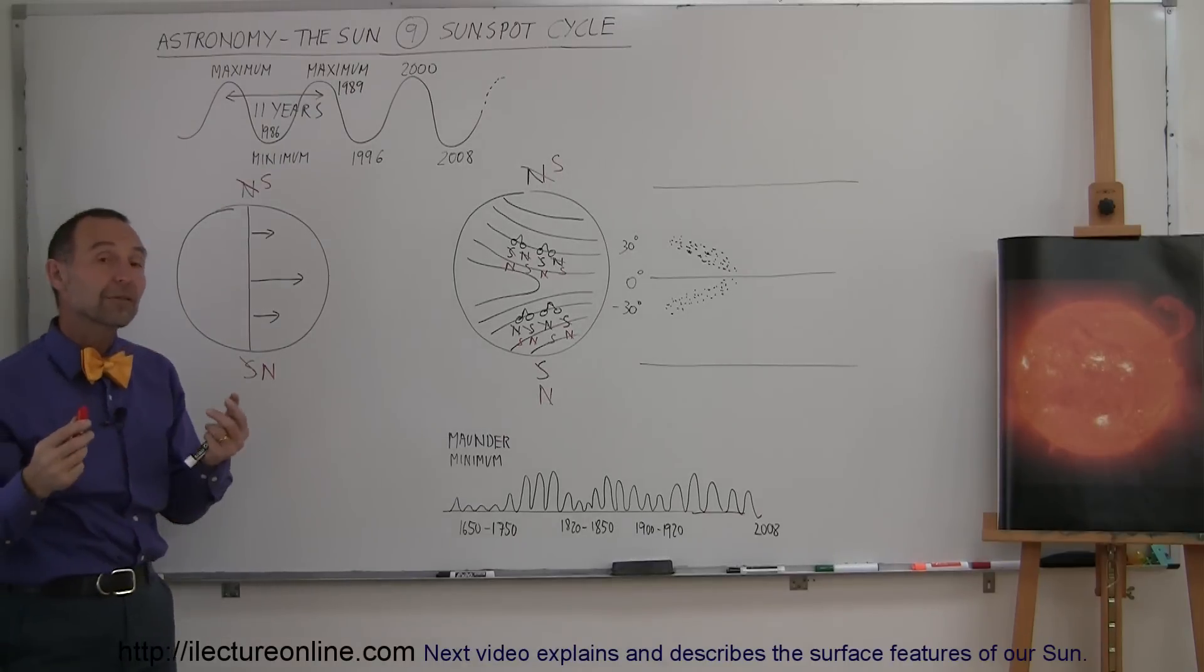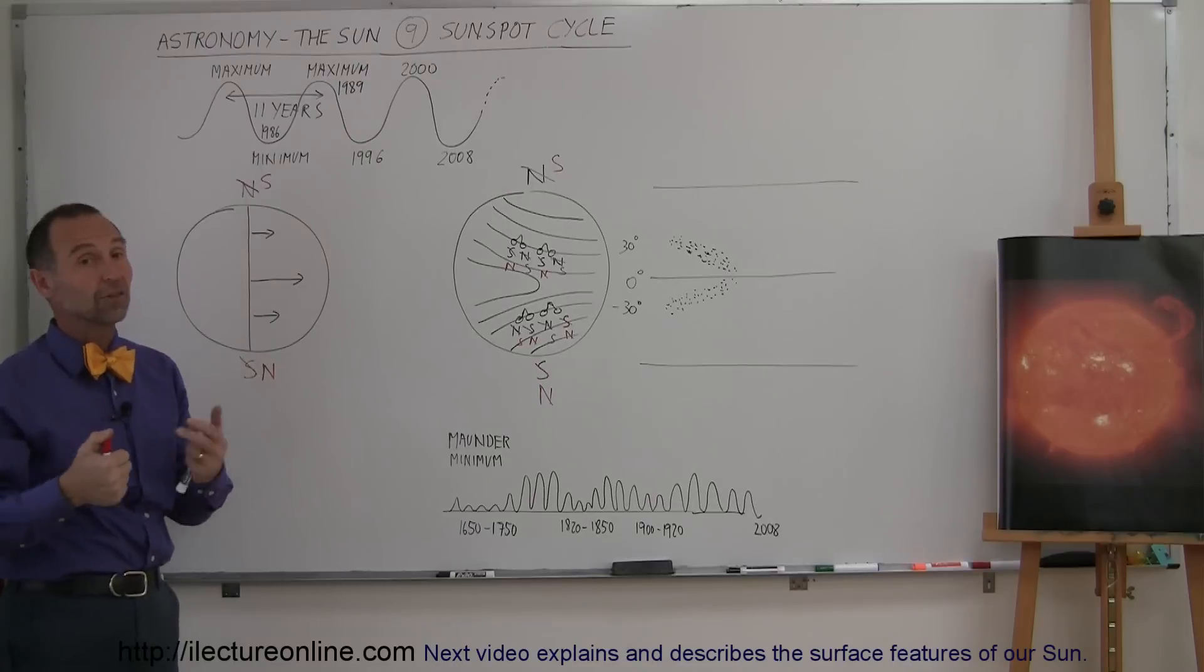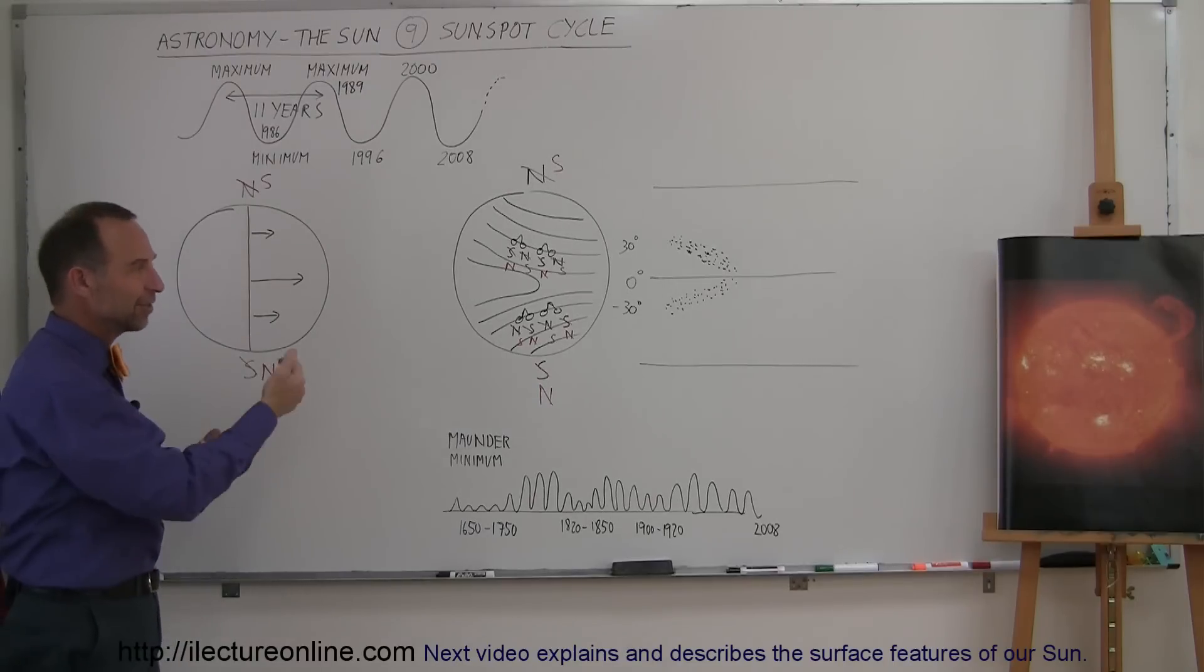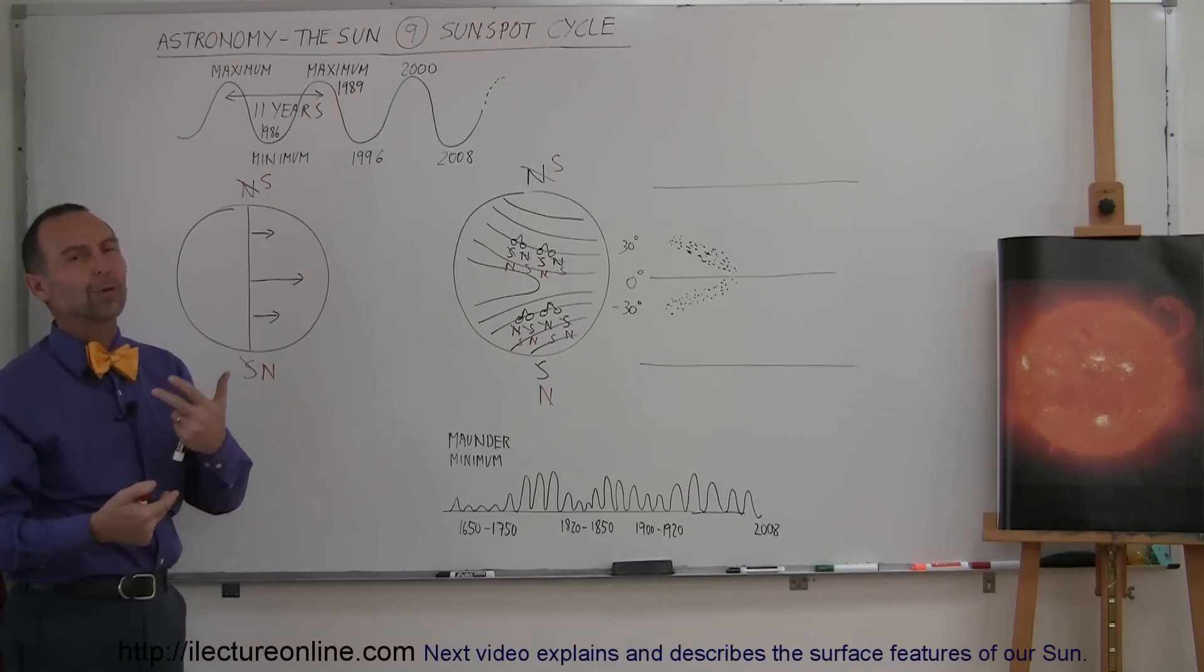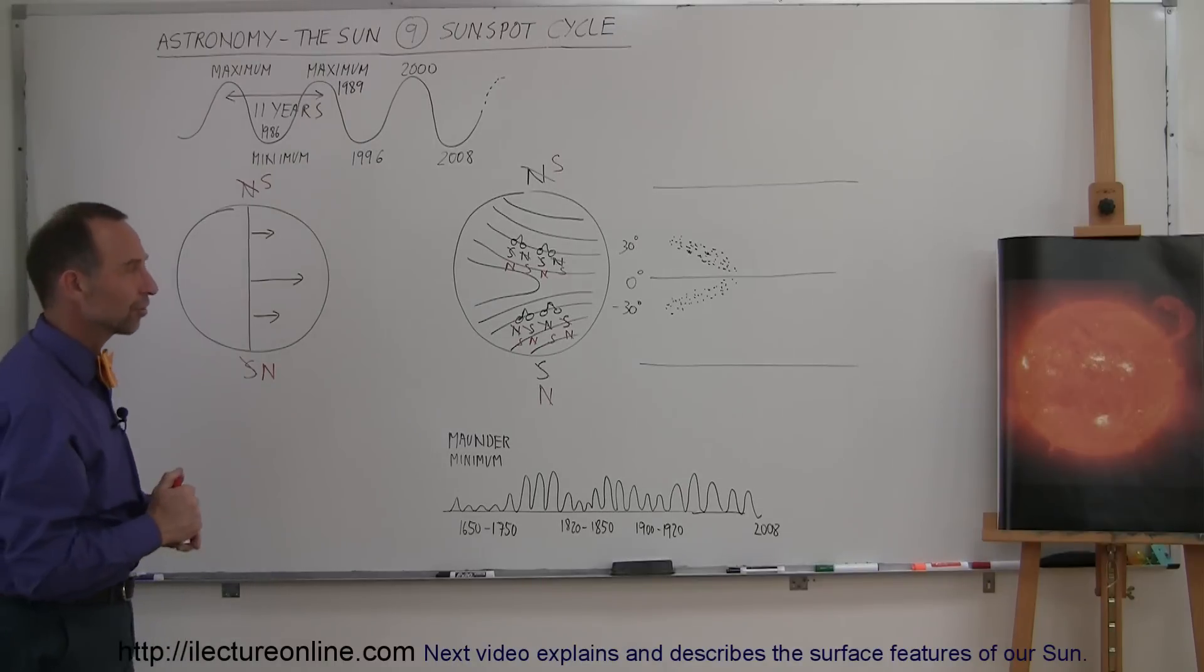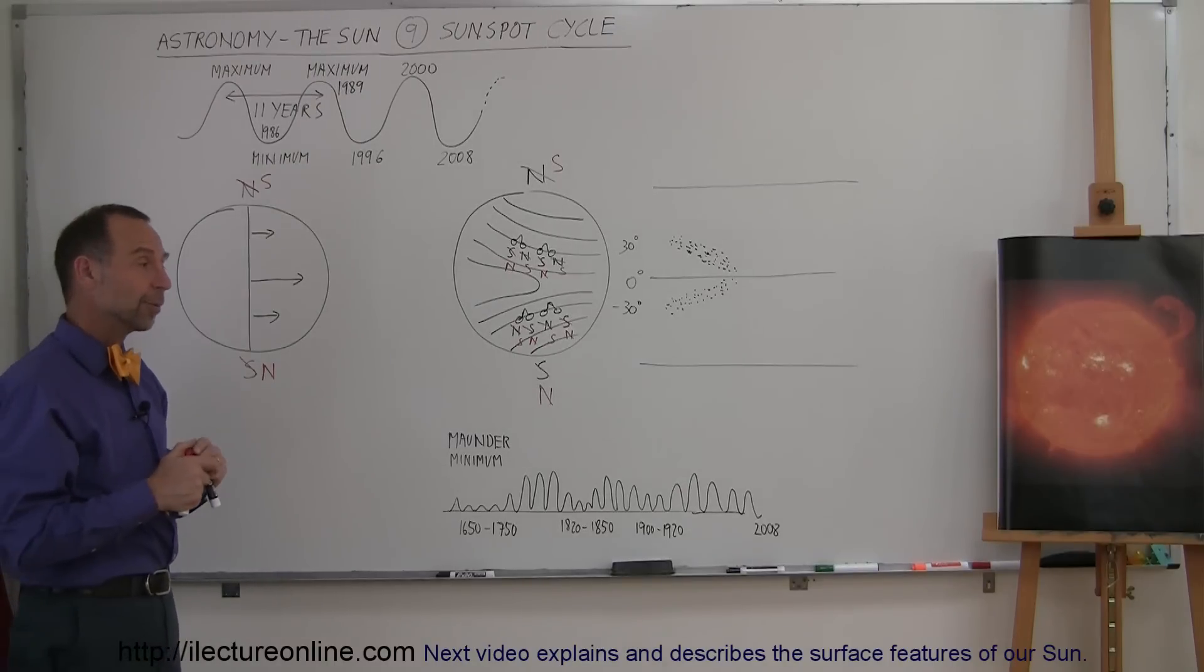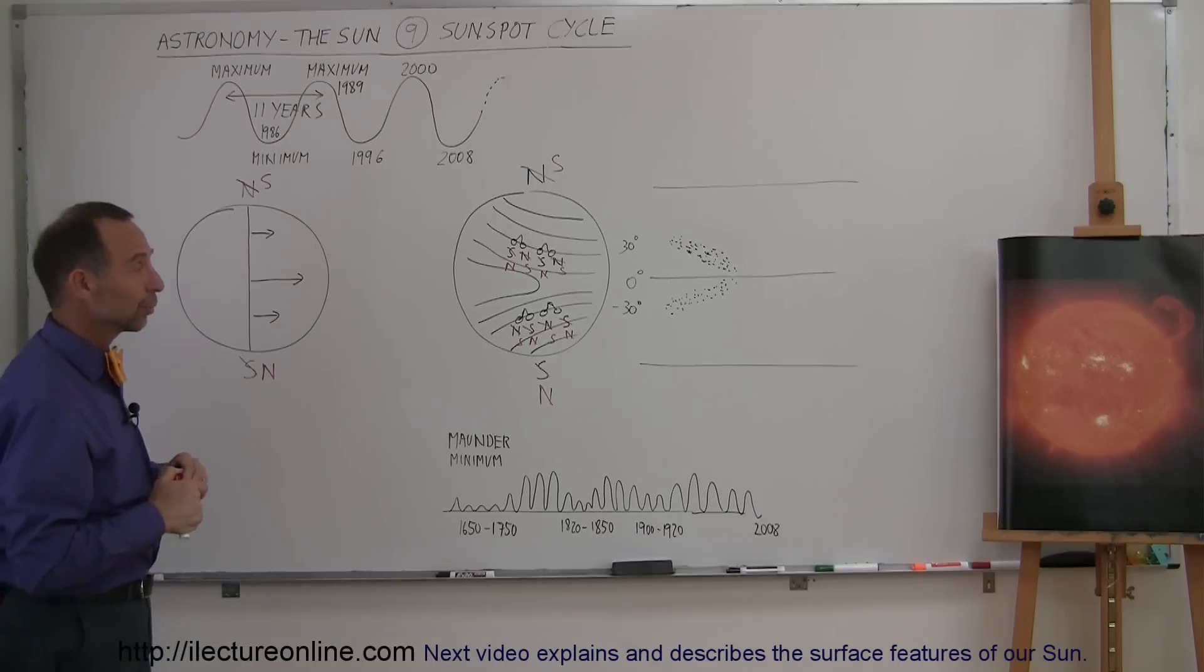So the polarity of the magnetic field in the sun does change. And as we've learned, the same thing happens to the Earth, except instead of 11-year cycles on the Earth, the cycles are more in the order of hundreds of thousands of years. And it turns out that we're probably actually close to reversal of magnetic field on the Earth, and we'll have to look a little bit more at that as well.